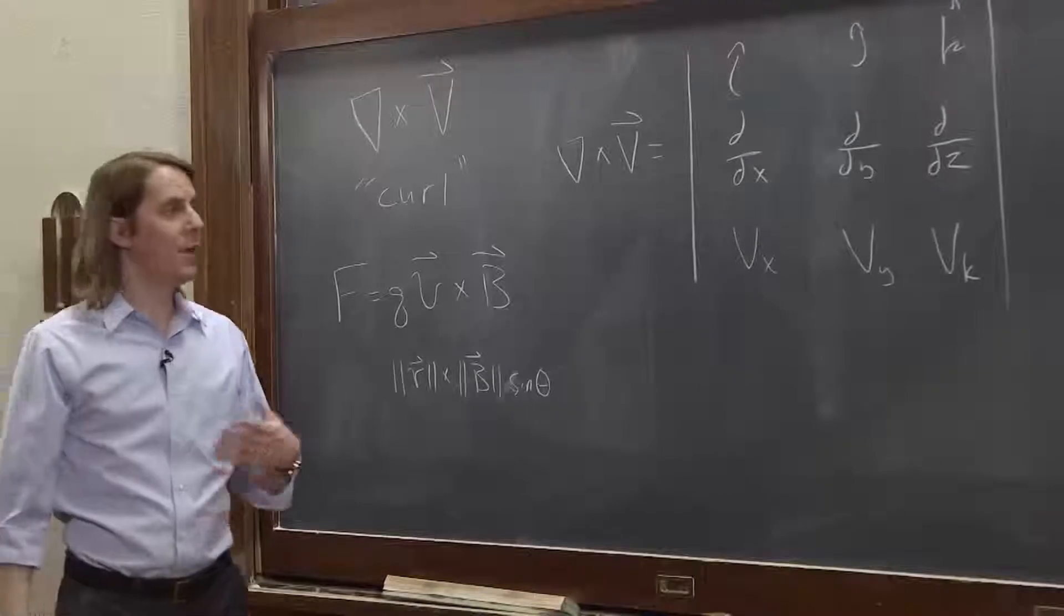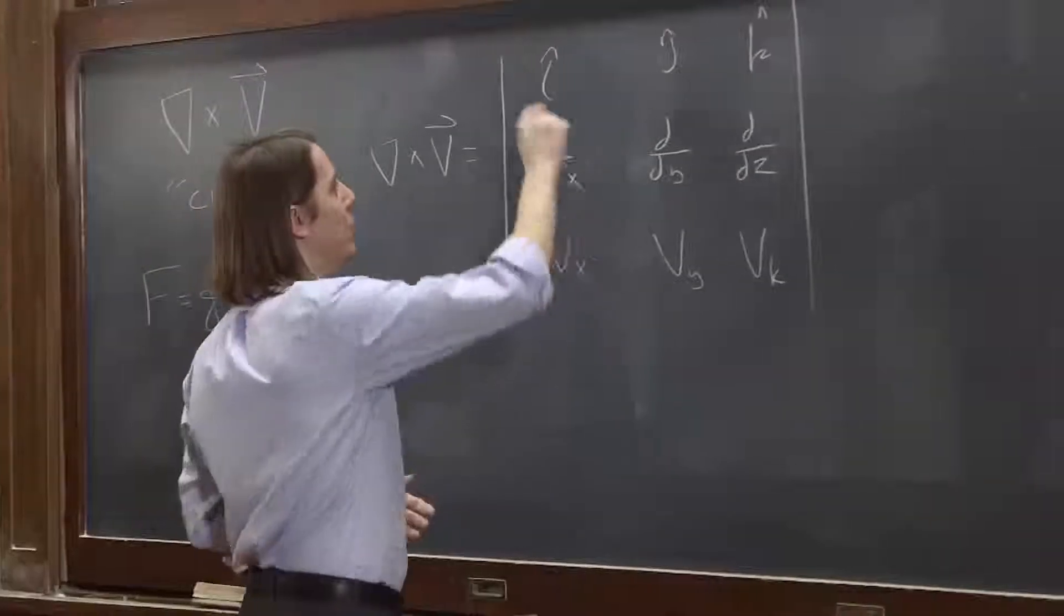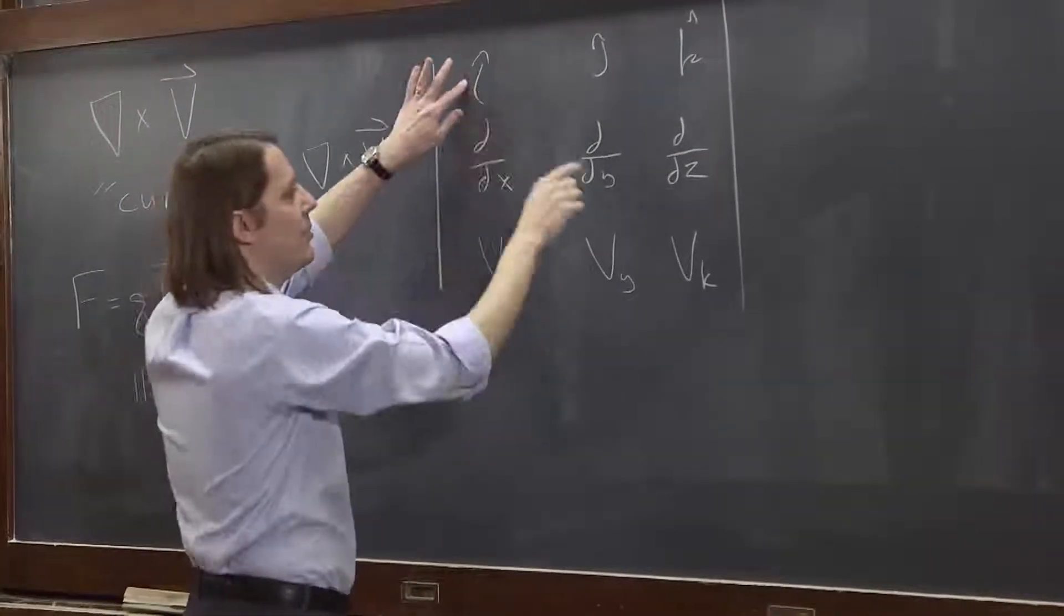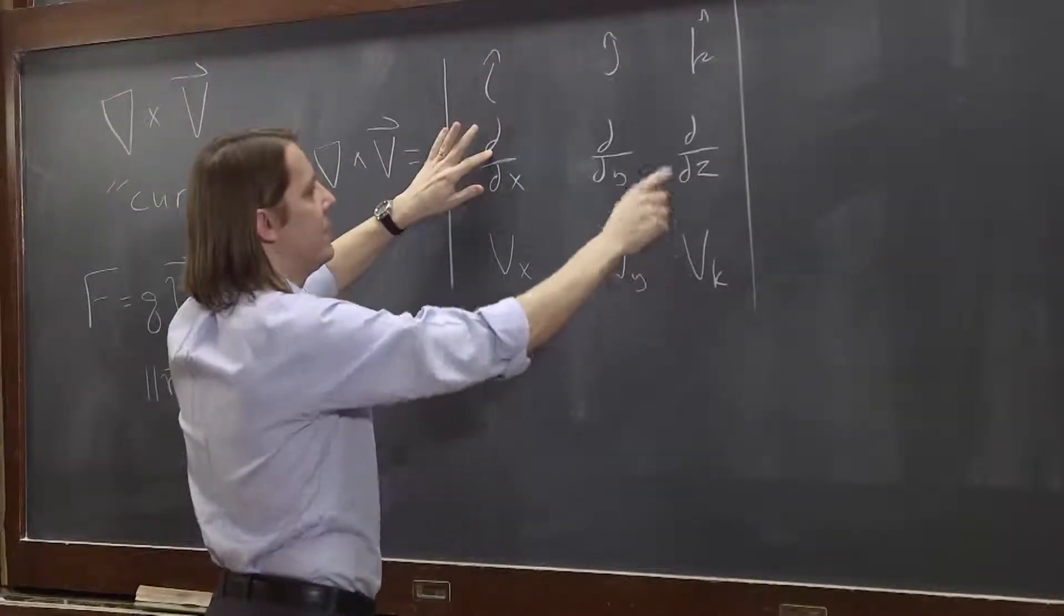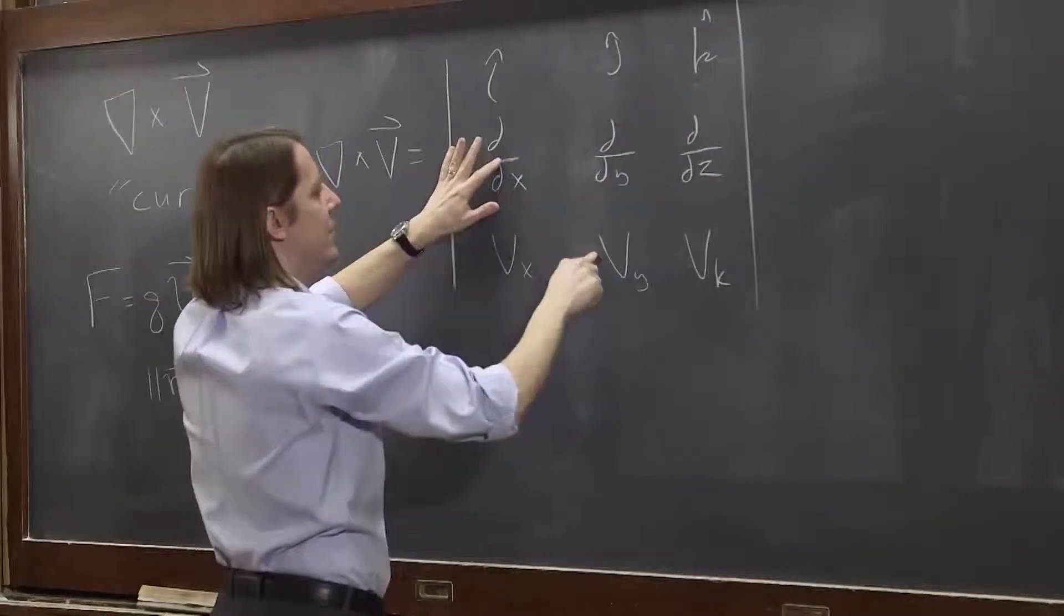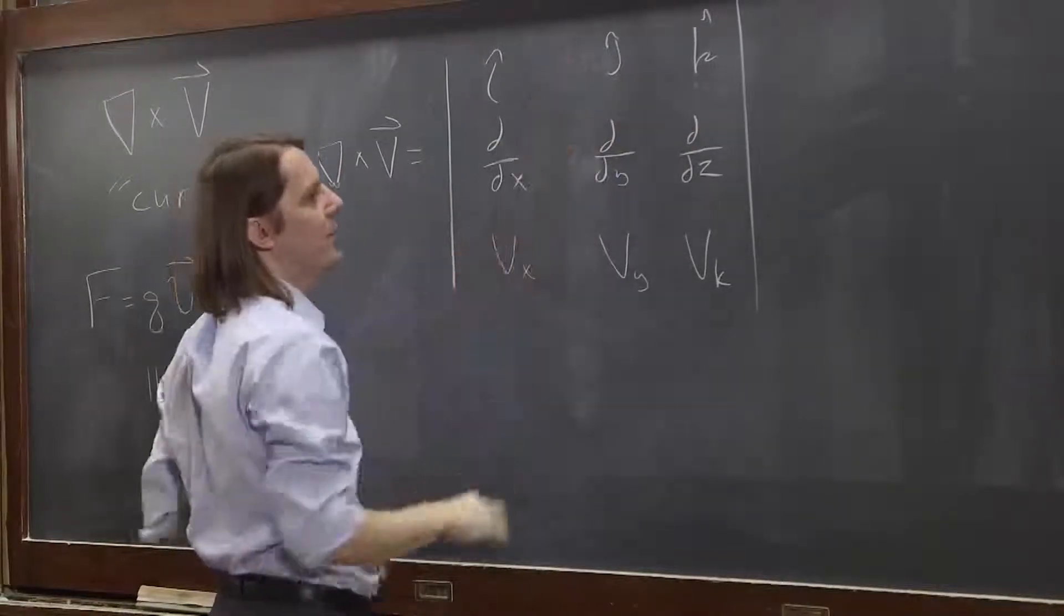So if you really want to get into this, you've got to know how to take that determinant. You say i hat times this times this, minus this and this. And then j hat, this times this minus this times this. And k hat, this times this minus this times this. Although there was a minus on the j hat, so it's this pattern.